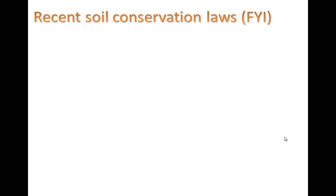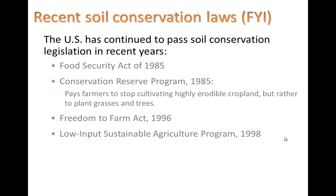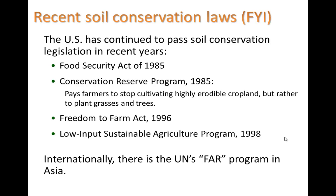There have been some recent soil conservation laws — FYI, not laws you have to know, but worth mentioning. The US has continued to pass soil conservation legislation: the Food Security Act of 1985, the Conservation Resource Program also in 1985 which pays farmers to stop cultivating highly erodible cropland and instead plant grasses and trees, the Freedom to Farm Act in 1996, and the Low Input Sustainable Agriculture Program in 1998. Internationally, there is the UN's FAO program in Asia, which studies approaches that have worked and tries to disseminate that practice further.